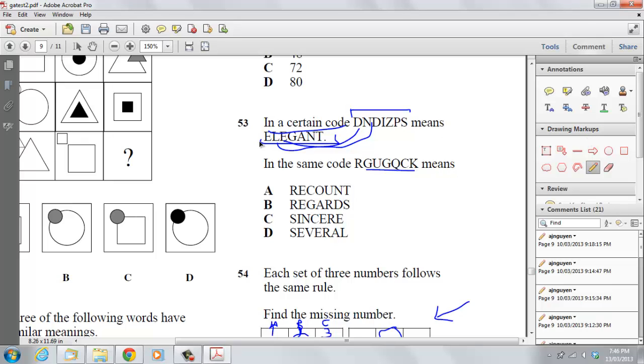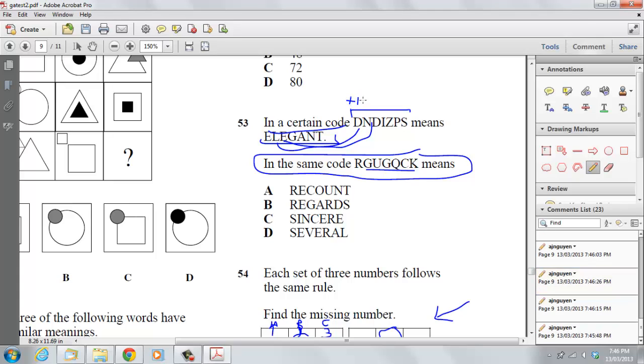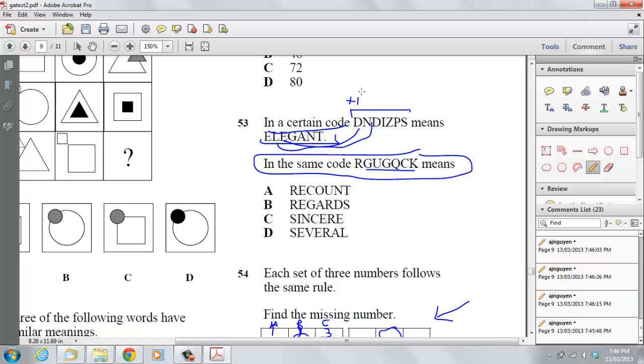E relates to D. Well how does D relate to E because this is what we're trying to figure out. D is actually, in order to get to elegant we need to add one letter. And in order to get to L we need to minus two letters. In order to get to E again it's plus one and then from I to G it's minus two.